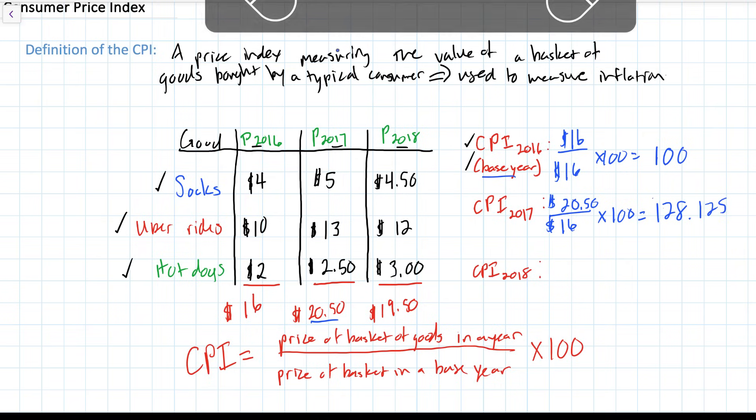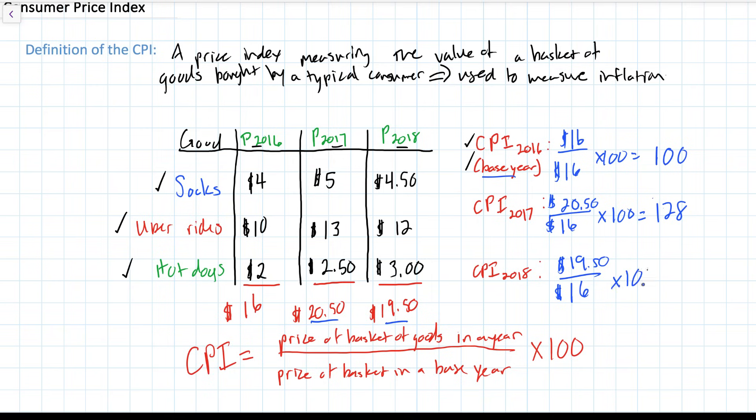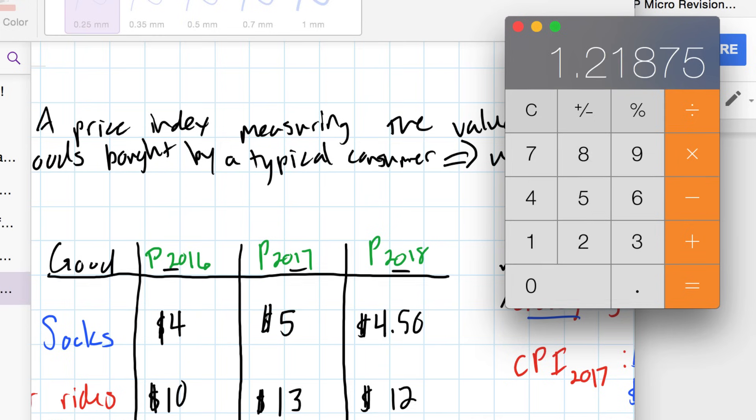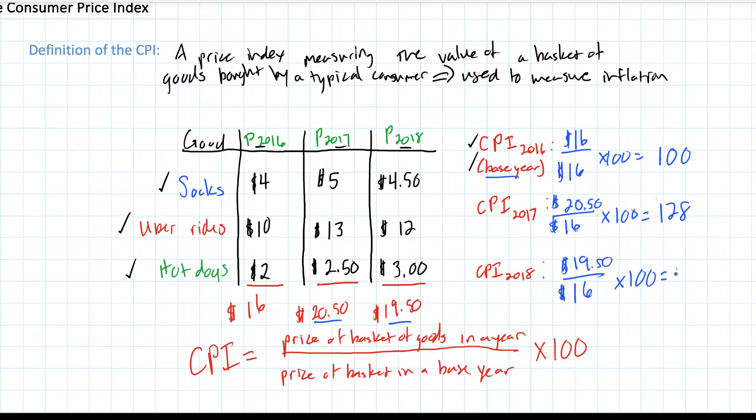We're just going to round that to 128 for the sake of simplicity. Now we can calculate the CPI for 2018. We take the price of the basket of goods in 2018, that's $19.50, and divide it by the price in 2016, which was $16. We'll multiply that by 100. We've got $19.50 divided by 16 gives us 1.21875. Multiply that by 100, we get 121.875. Let's round this one to 122.